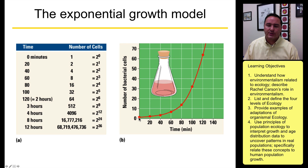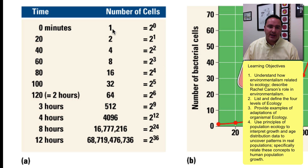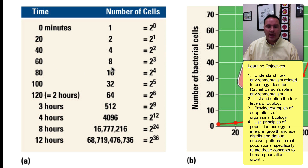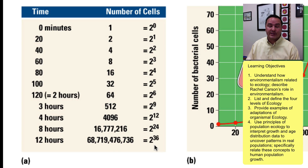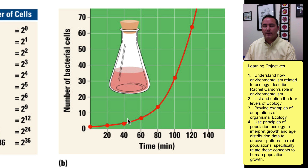As we watch populations grow, we see something very interesting. If we start off with one bacterial cell — it takes 20 minutes for E. coli to divide — so after 20 minutes we have two cells, after 40 minutes four cells, after 60 minutes eight cells, after 80 minutes 16 cells, and so forth. After 12 hours, you now have 2 to the 36 cells. If you plot this out, this ends up looking like an exponential growth curve.